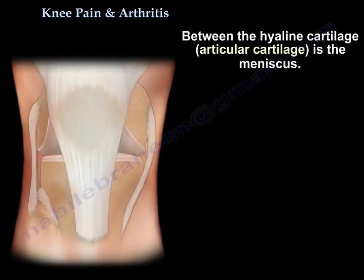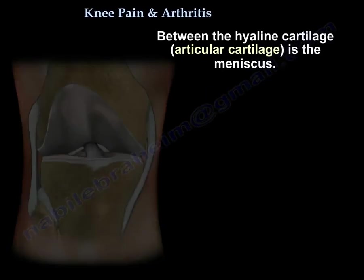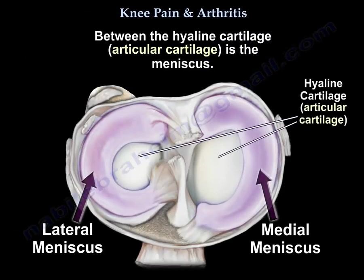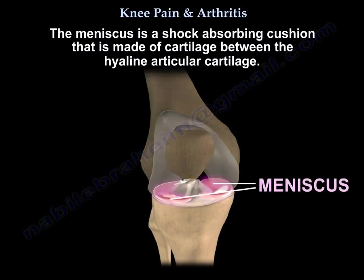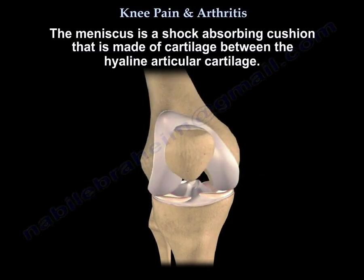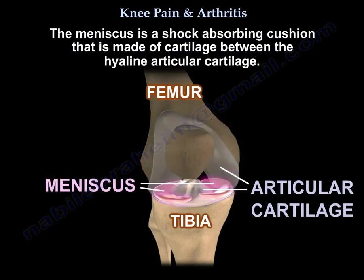Between the hyaline cartilage, which is articular cartilage, is the meniscus. The meniscus is a shock-absorbing cushion made of cartilage between the hyaline articular cartilage. Here you can see the hyaline articular cartilage of the femur and of the tibia, and the meniscus lies in between them.